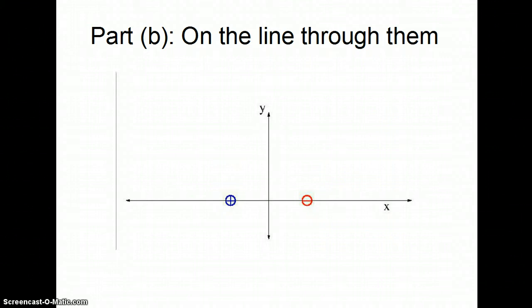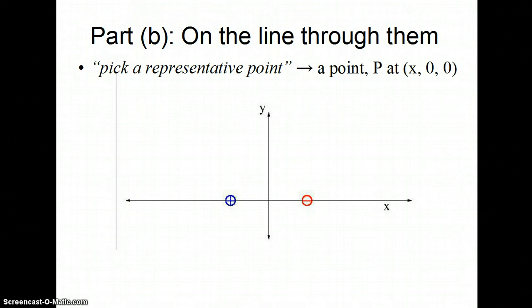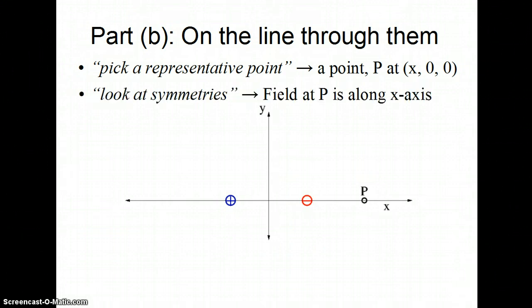Parts B and C get much more interesting. When I pick a representative point, I pick a point at x, zero, zero in the coordinate system I've drawn. I've picked a point on the right side at x is greater than a. When I look at symmetries and the geometry, I see that the electric field due to the positive charge and the negative charge are both only along the x-axis. For the point I've drawn, the attractive force to the negative charge is stronger than the repulsive force from the positive charge, so my field will be to the left.